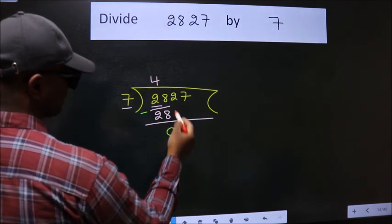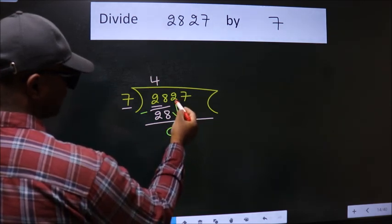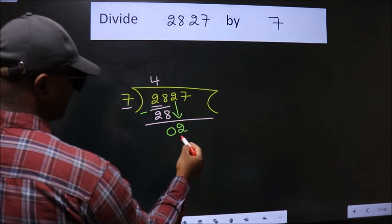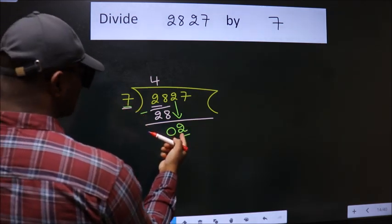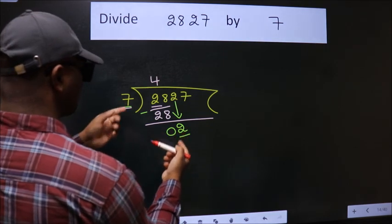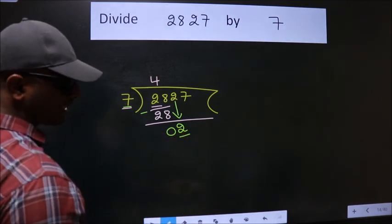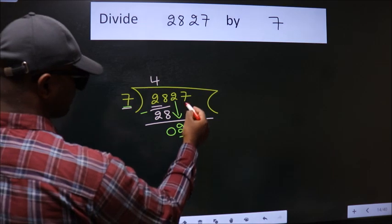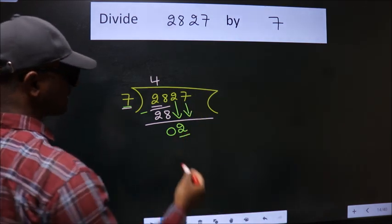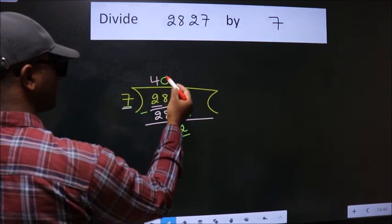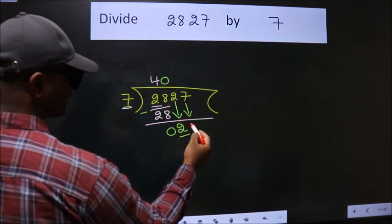After this, bring down the next number. So 2 comes down. Here we have 2, here 7. 2 is smaller than 7, so we should bring down the second number. The rule for bringing down the second number is to put 0 here. Then only we can bring down this number.